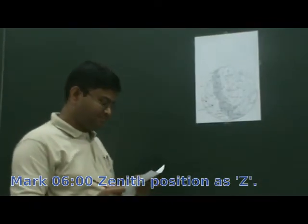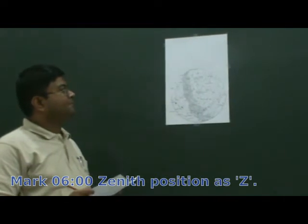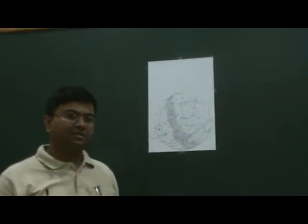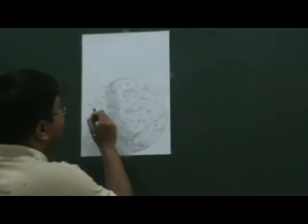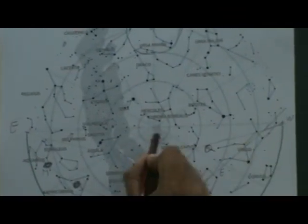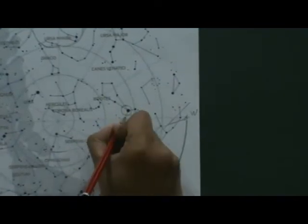Which star was very close to the zenith at 6 AM today — mark it on the map as N. As we said, all stars go around in roughly circles around the pole star. The star which was close to the zenith at 6 AM, that is 3 hours before 9 AM, would be halfway to setting at 9 AM. So halfway between zenith and the setting point, you see a star here which is a reasonable candidate to be marked as N.